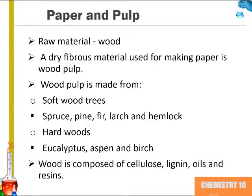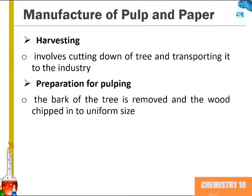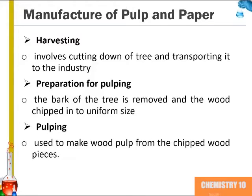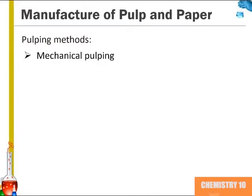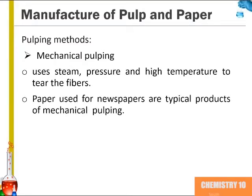Wood is composed of the proteins cellulose, lignin, as well as oils and resins. To begin the industrial process, trees are harvested and transported to the industry. The bark of the tree is removed and the wood is chipped into uniform size. Pulping is the process in which wood pulp is made from the chipped wood pieces. Mechanical pulping involves steam, pressure, and high temperature to tear fibers, and the end products are typically used in products such as newspapers.